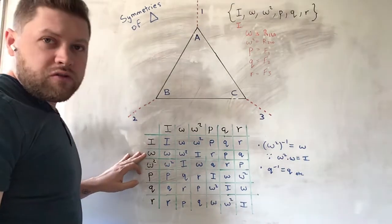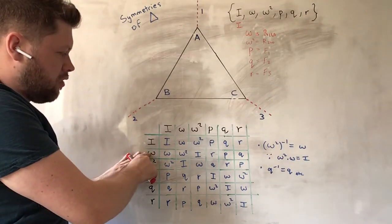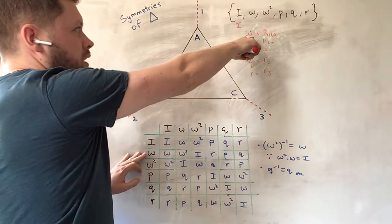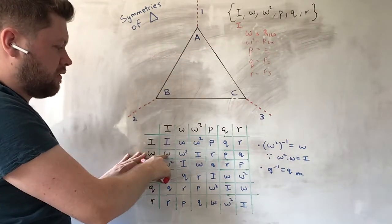But if we take a more interesting sample case and choose omega. Omega, if we do an omega rotation, which is a rotation of 120 degrees, and then we do nothing, it's still omega.